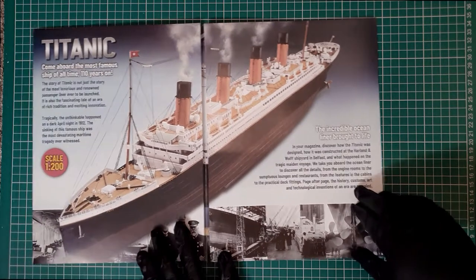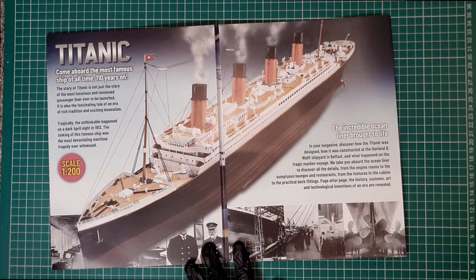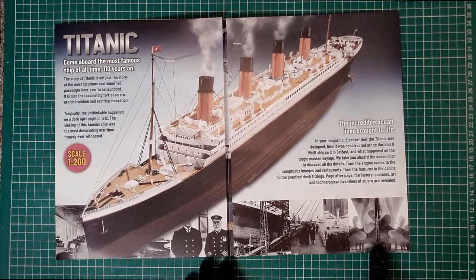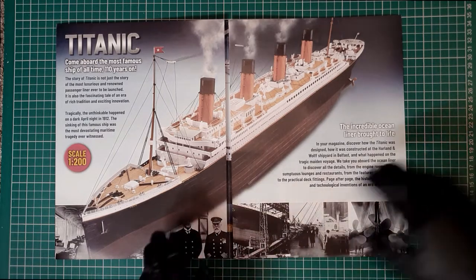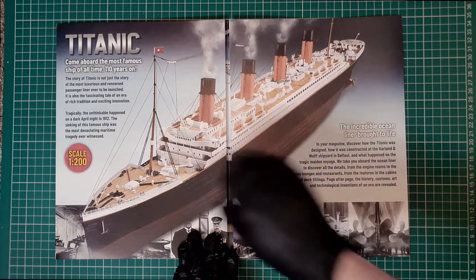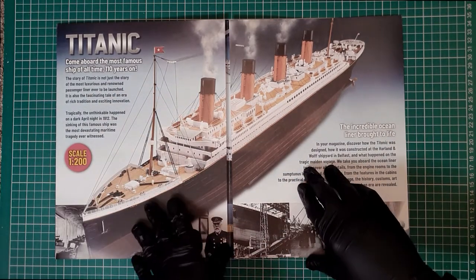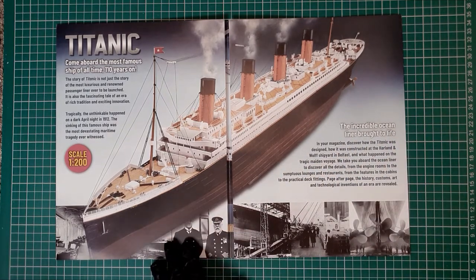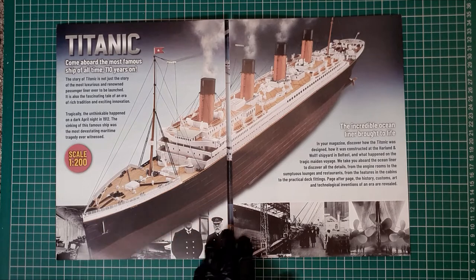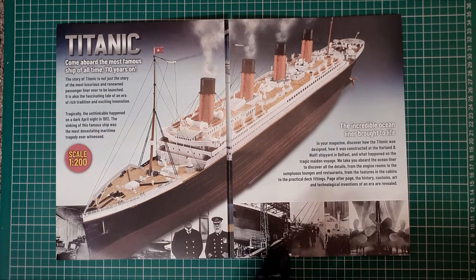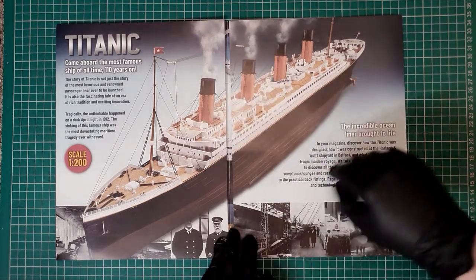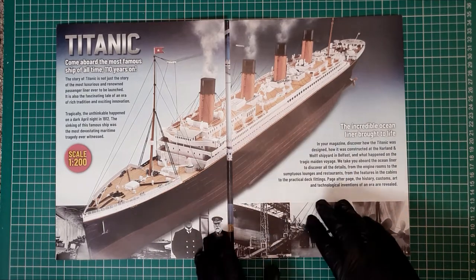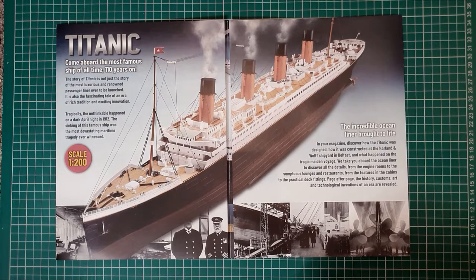This is the fold-out pamphlet you get with issue one. On the inside I've got a lovely image of the model here, some photographs at the bottom of the ship. Come aboard the most famous ship of all time, 110 years on. This is the incredible ocean liner brought to life. This is a die-cast model. I will be building this all the way through to the final stage. It comes with smoke, interior electronic lights, as well as the decking detail, photo-etched parts, wooden decking. Should be a pretty cool model.